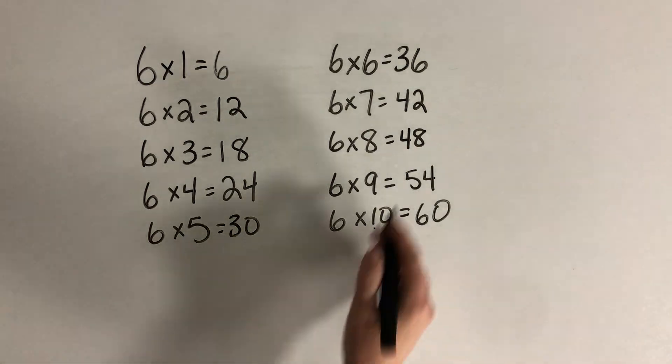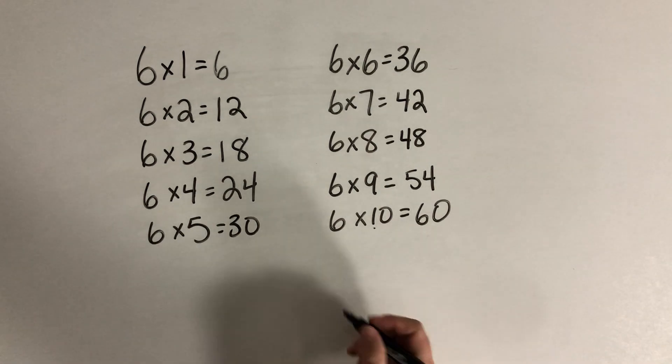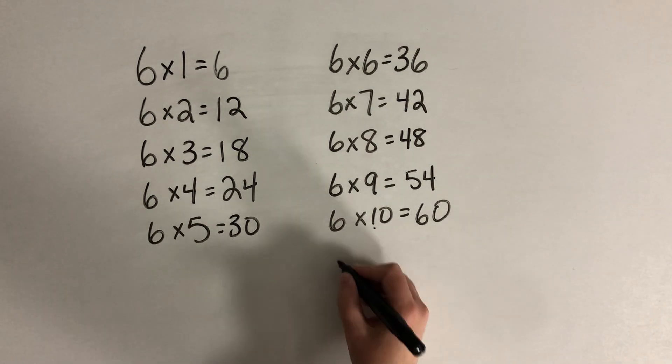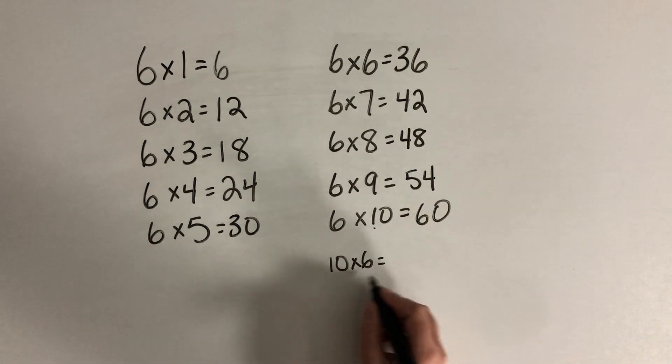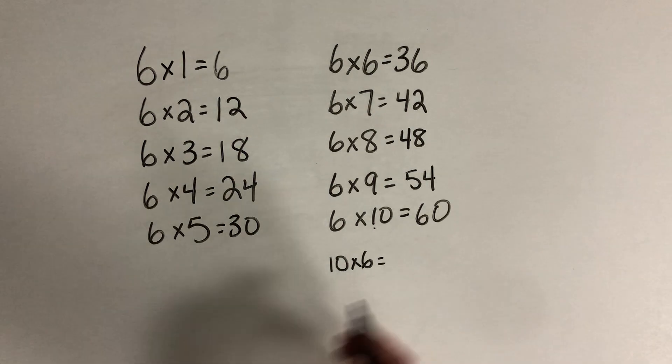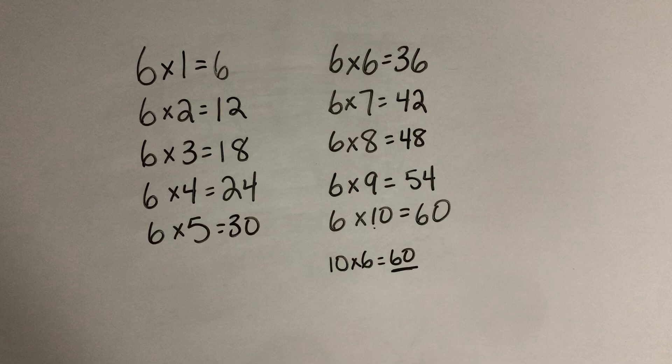So sometimes the way I think about these, I just switch the factors around in my mind. So instead of 6 times 10, I might think to myself, 10 times 6. Because we know that when we multiply, we can change the factors around and it doesn't affect the product. It still gives us the same product.